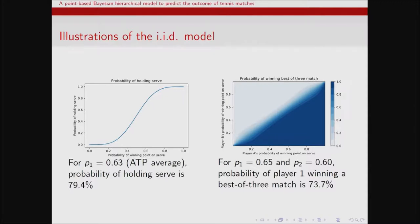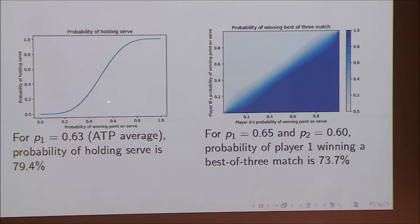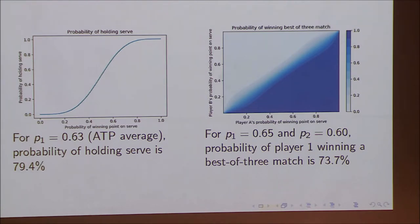Here's the probability of holding serve as a function of the probability of winning a point on serve. It has this kind of sigmoid shape. On the ATP, the average serve winning probability is about 63%, so the probability of holding serve is about 80% — that's why you don't see a lot of breaks in men's tennis. You see more breaks in women's tennis because they'd be lower on this curve, due to the dominance of serve on both tours. You can also look at the probability of winning a match, which gives this kind of contour plot — a function of two variables. The contours are pretty closely bunched together, so at the match level, small differences are magnified quite a lot, and even just a 5% gap becomes pretty significant.